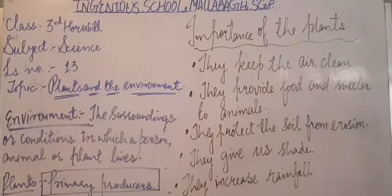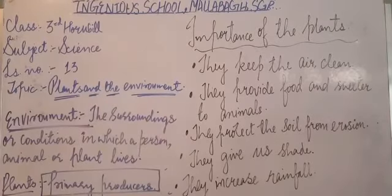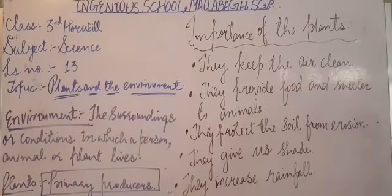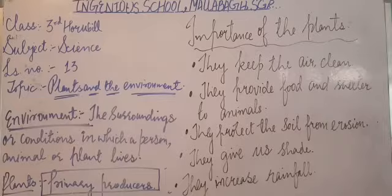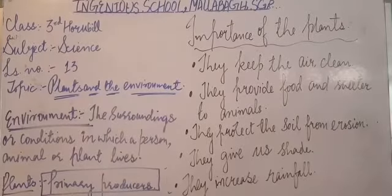Plants are known as the primary producers. They can make their own food. They are not dependent on other animals for their food, unlike us — we are dependent upon animals and plants. Plants are the producers; they can produce and make their own food. This is one of the greatest and most efficient qualities of plants — that they can prepare their own food.